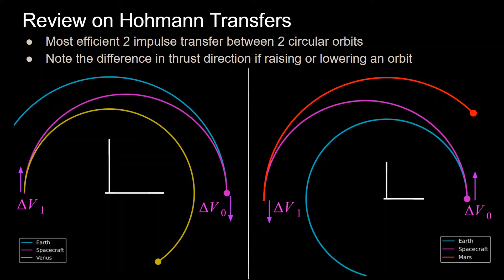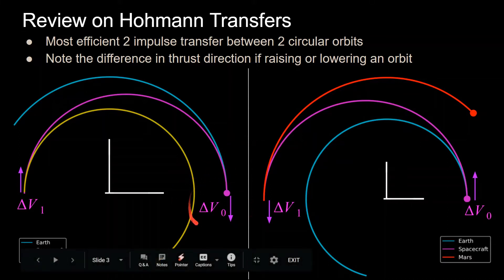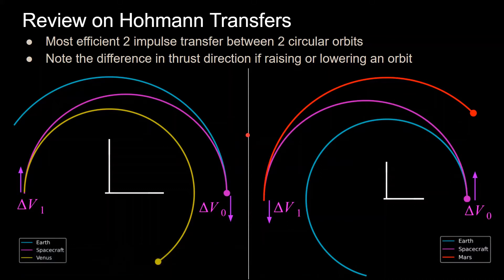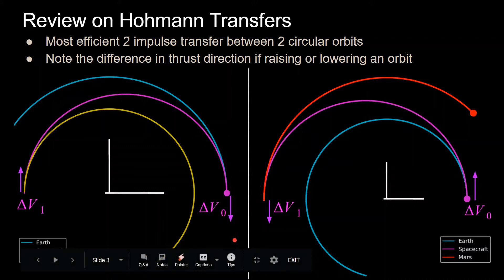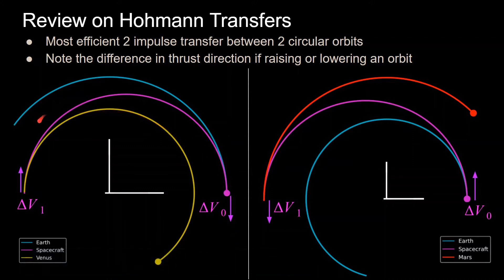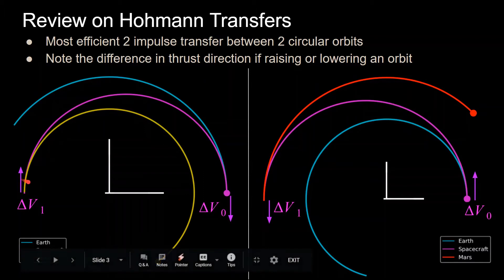Let's go over the differences between Hohmann transfers that lower and raise an orbit. On the left we have the Earth-to-Venus transfer, where the goal is to go from Earth's orbit around the Sun to Venus's orbit. In this case, we are decreasing the semi-major axis of the spacecraft. When departing from Earth, the thrust needs to be in the opposite direction of the velocity, so the spacecraft slows down its orbit around the Sun. And once the spacecraft arrives at Venus's semi-major axis, it must again thrust in the opposite direction of its velocity to decrease the semi-major axis when it gets there.